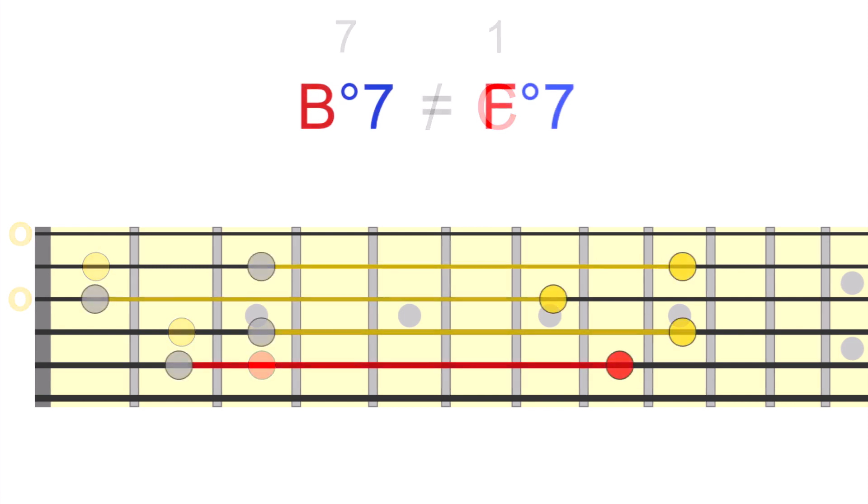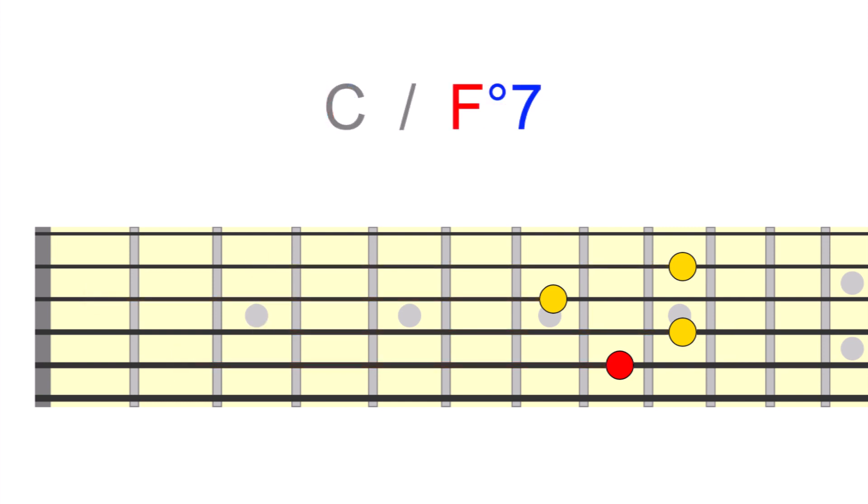And using the symmetry from earlier, we can again take this up the neck to relative positions. For example, in the 4 position of F and beyond. We can hear a tension resolution effect with the diminished 7th chord in these positions, similar to how the dominant functions.